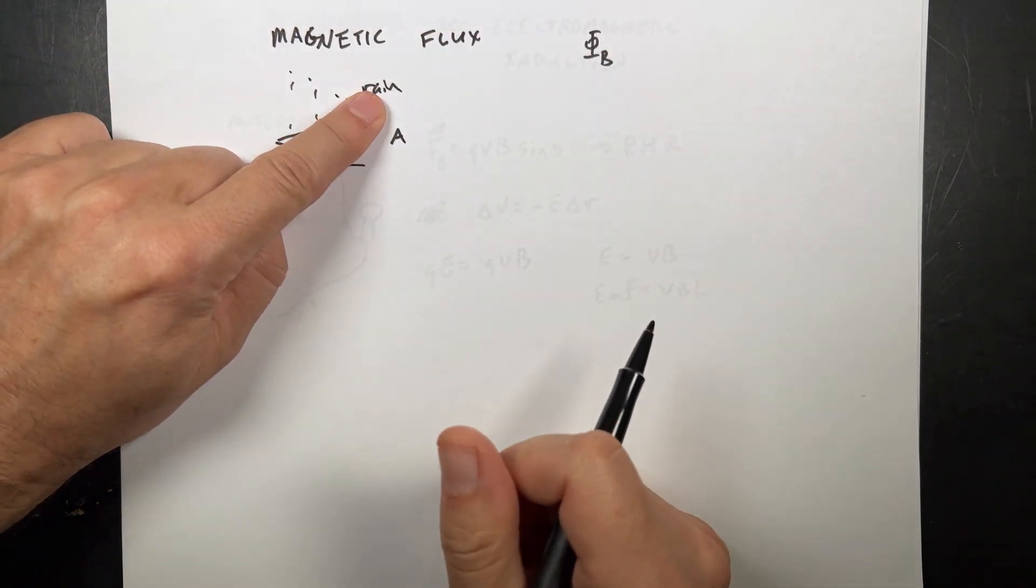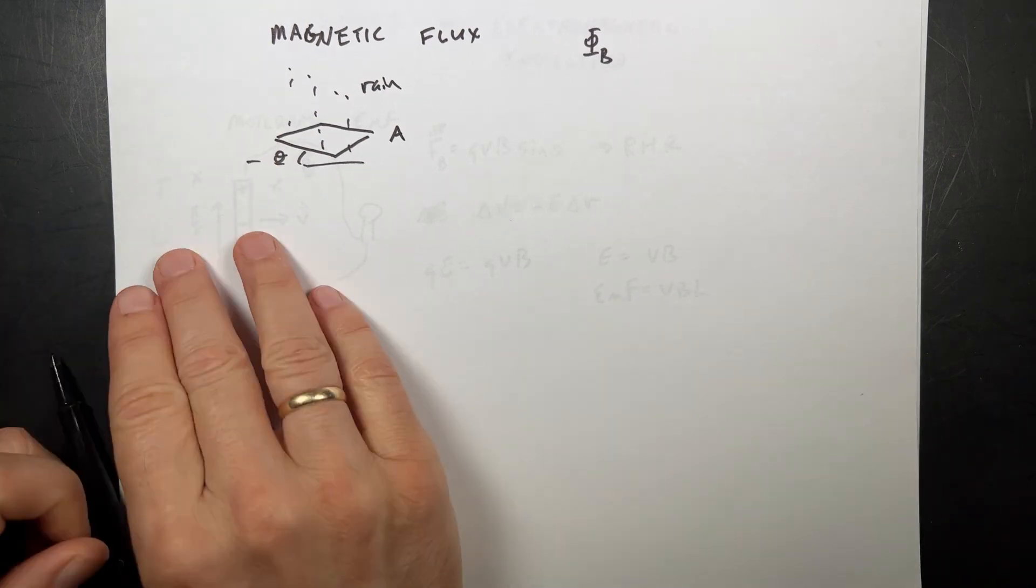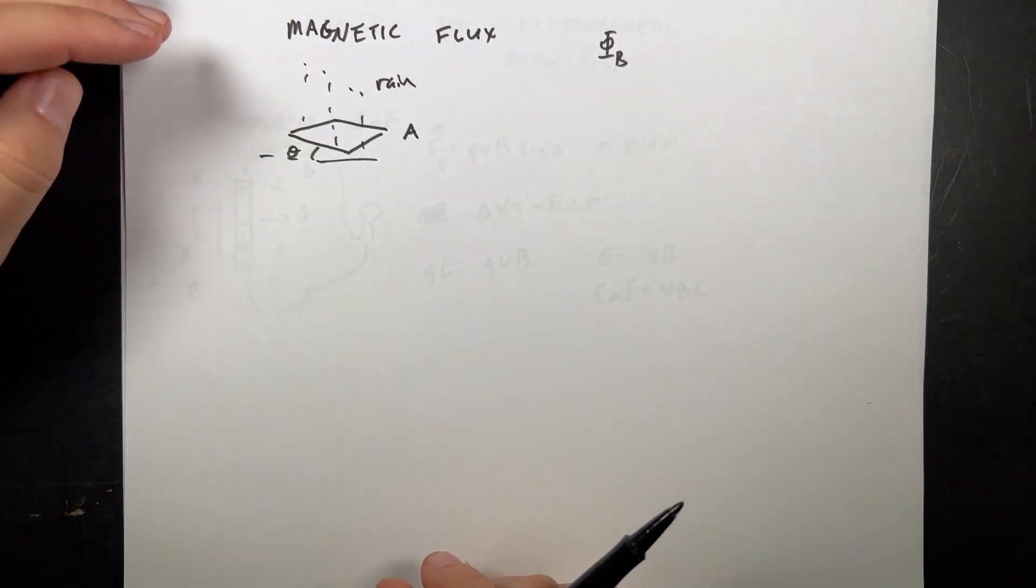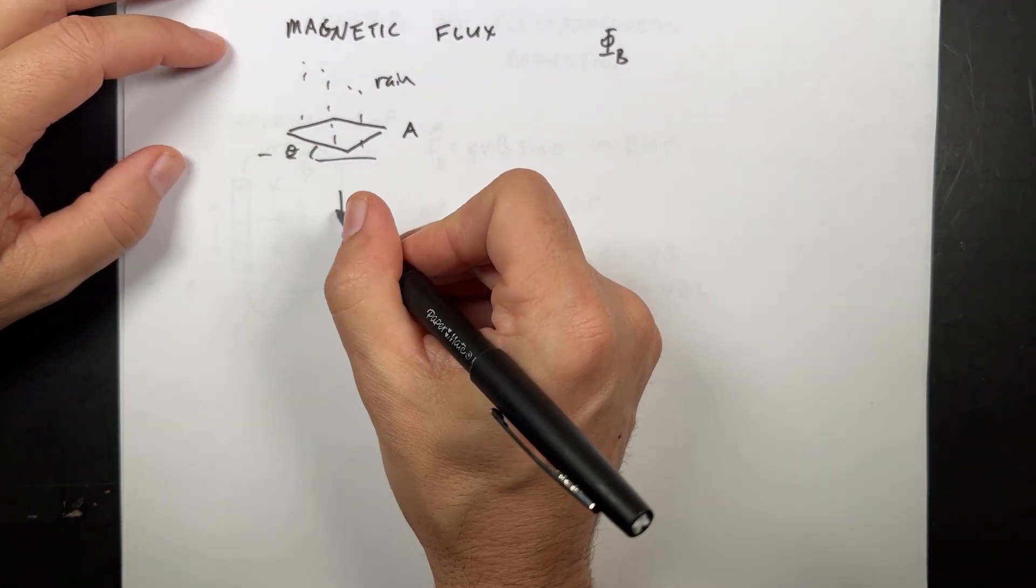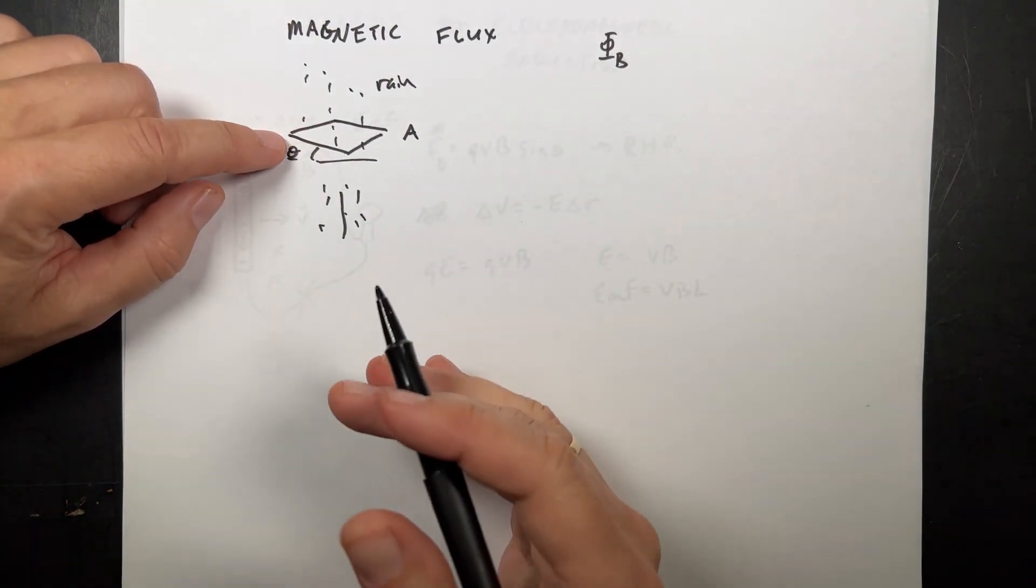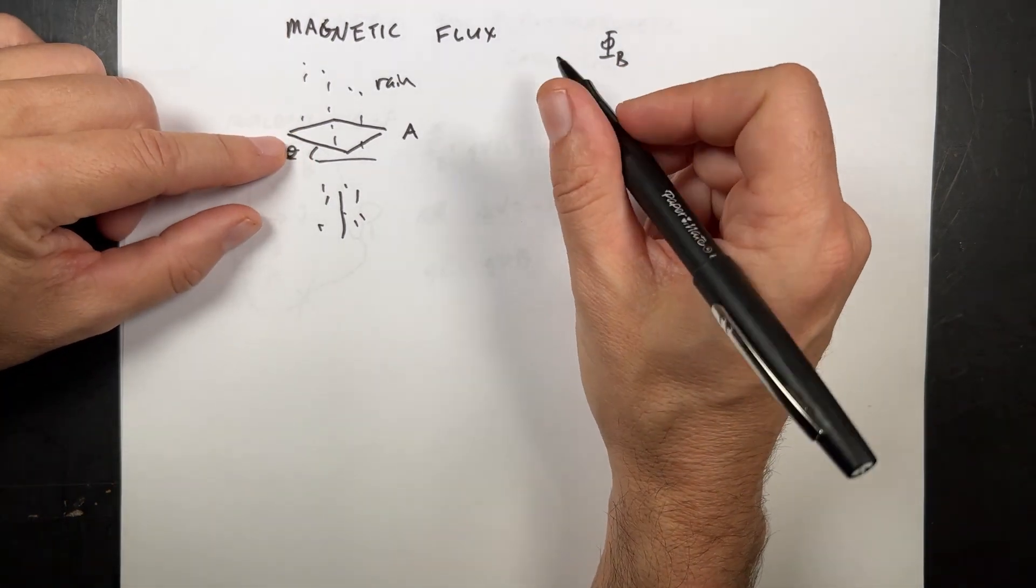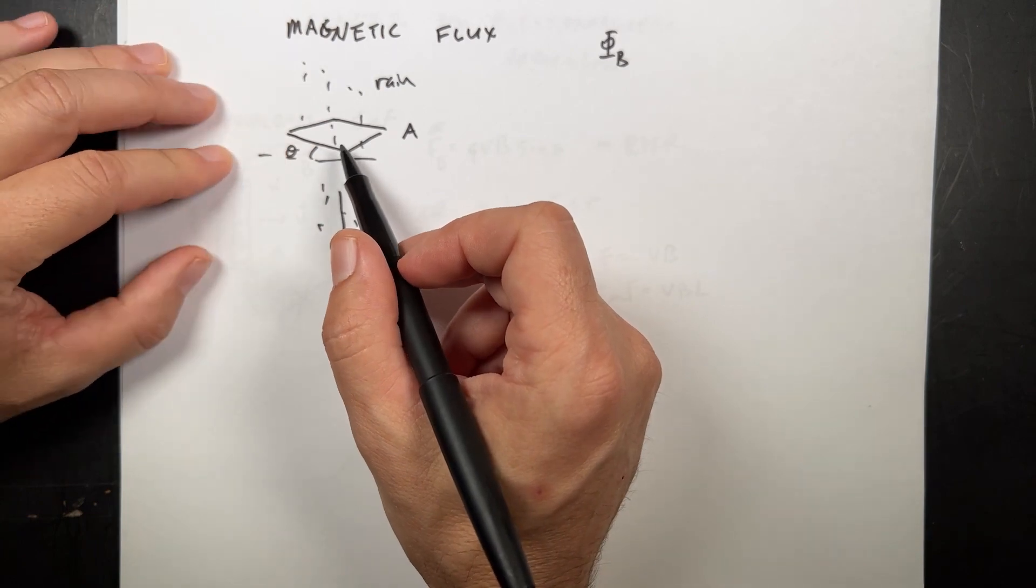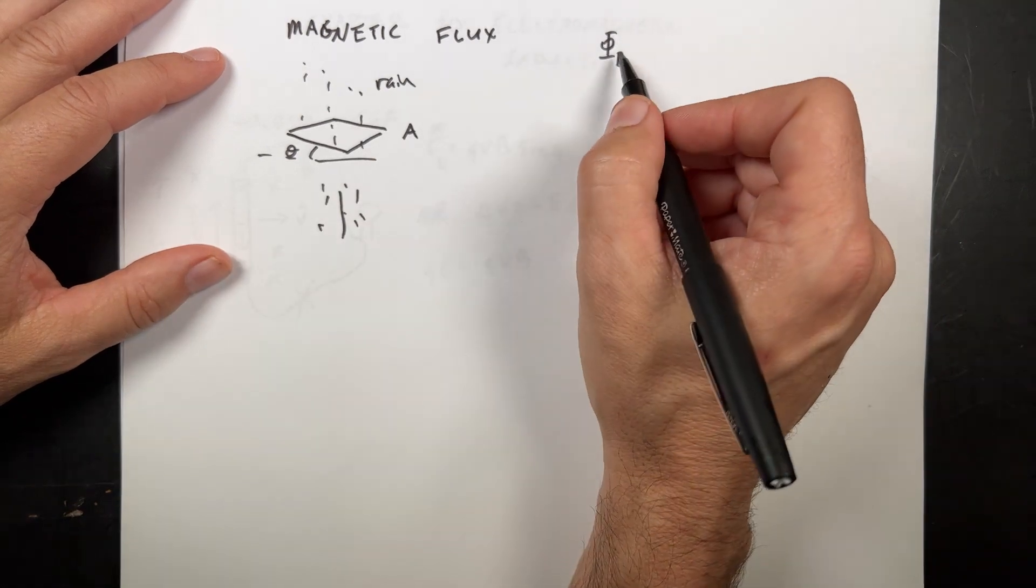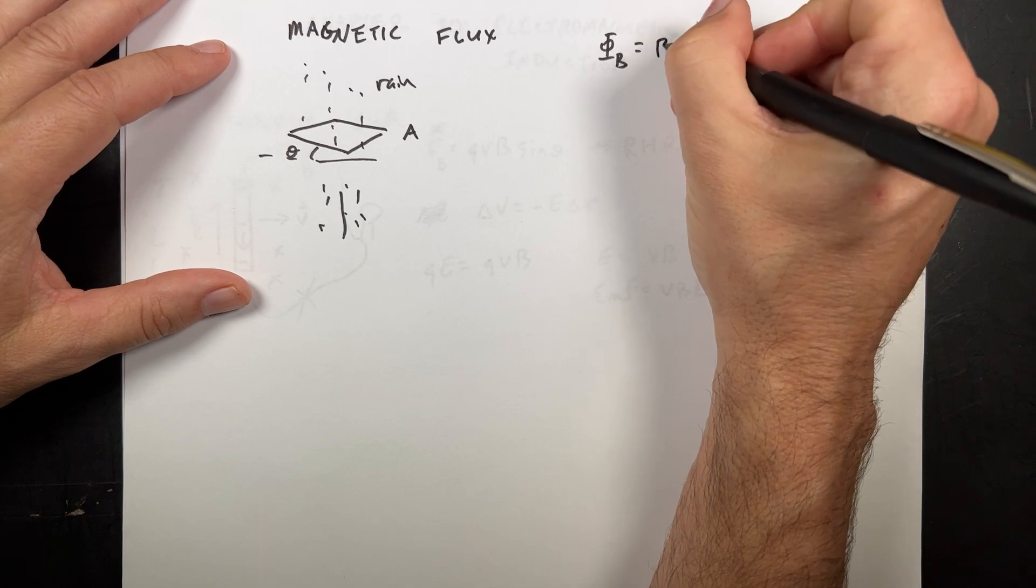Well, it depends on a couple things. This is rain. It depends on the rain. It depends on the size of the plate. And the area, the angle. If I tilt that plate up, then I can get to the point where I have a plate like this and it's raining and none of the rain hits it. So as I increase that angle, then I have less and less rain. Well, the same thing happens for magnetic fields.